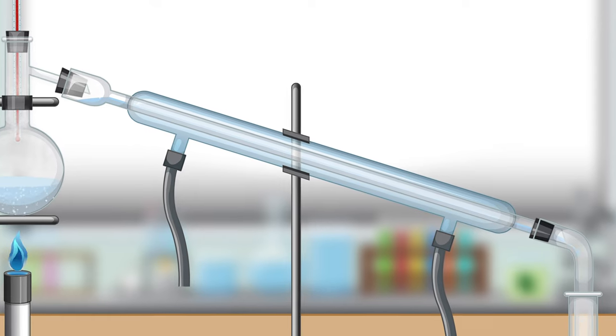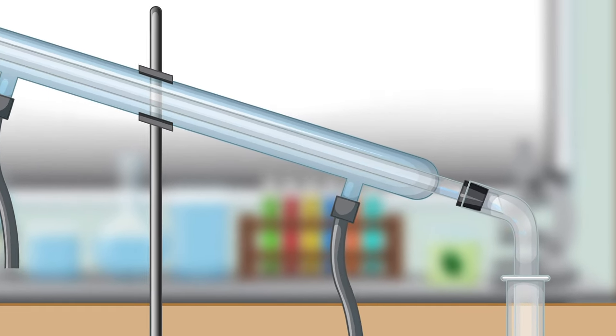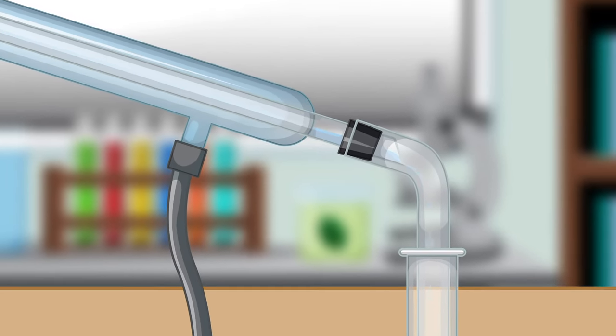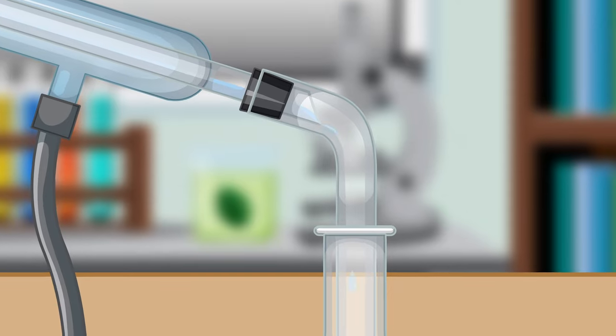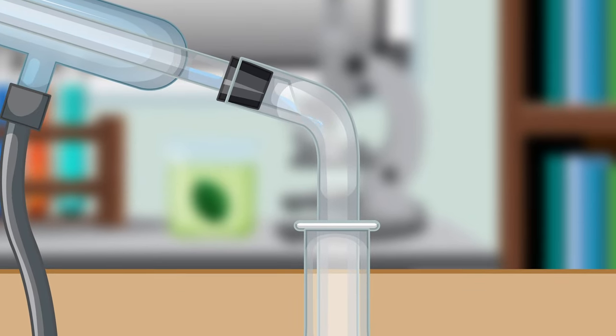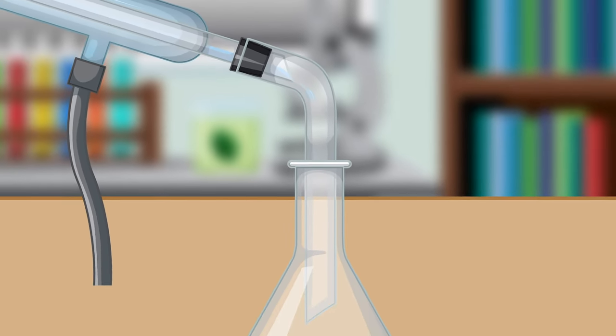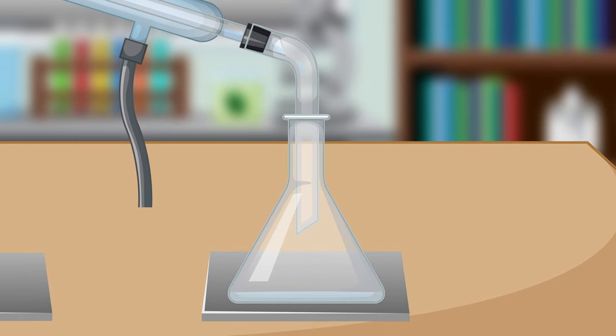Step 6. Collection of the distillate. The condensed liquid, known as the distillate, drips from the condenser into the receiving flask. This distillate is the purified substance that we aimed to separate from the mixture in the distillation flask.